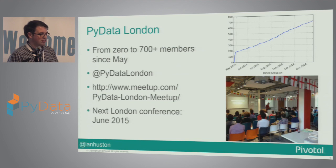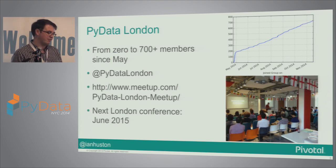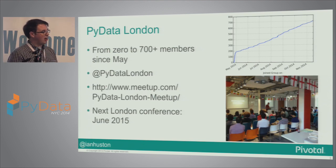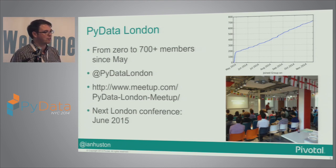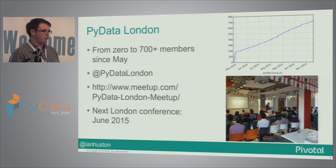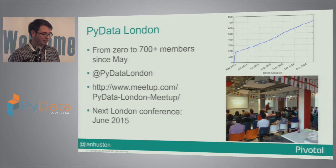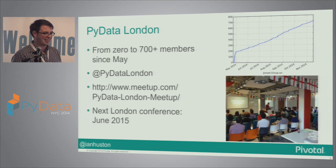Before I get into Cloud Foundry I just want to quickly shout out about PyData London. This is a meetup group that was started after the first PyData London conference and we've been hosting it at Pivotal for the last six months. They've grown from zero to 700-plus members since May, and the organizer Ian Oswald likes to tell James Powell that it's actually the fastest growing Python data meetup — not the biggest yet but growing fastest. The next London conference is being arranged for June next year, so if anyone's in Europe try and head to that.